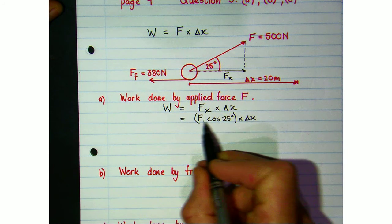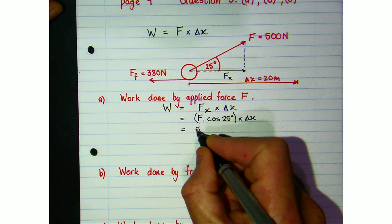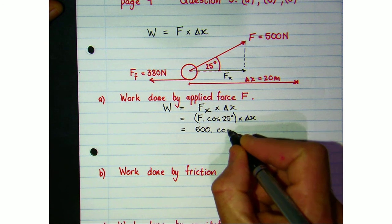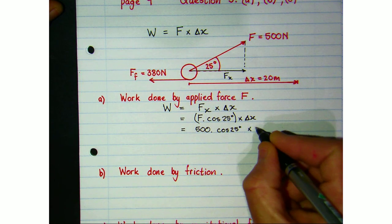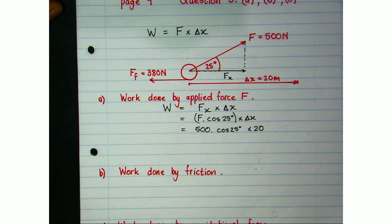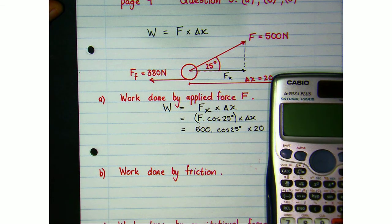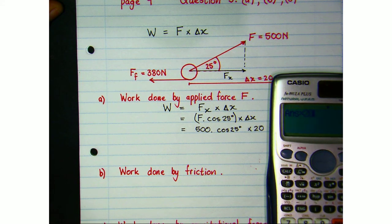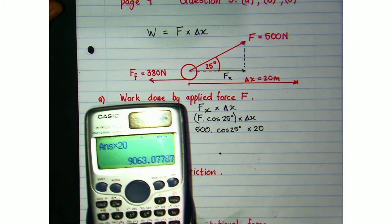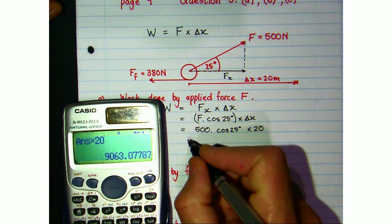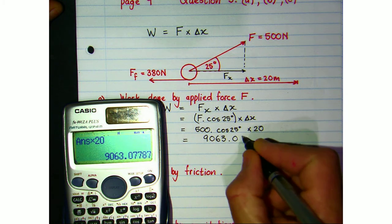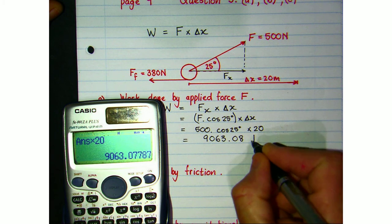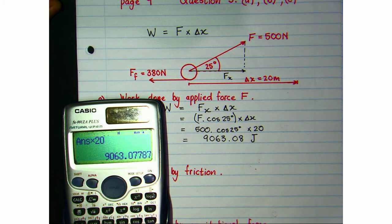The force we're after is 500 cos 25°, multiplied by the 20 meters. Putting that into the calculator gives an answer of 9063.08 joules. You'll remember that the unit for work done is the joule, so that's positive work being done — that amount of energy is added to the roller.